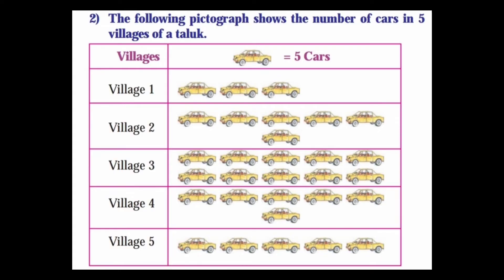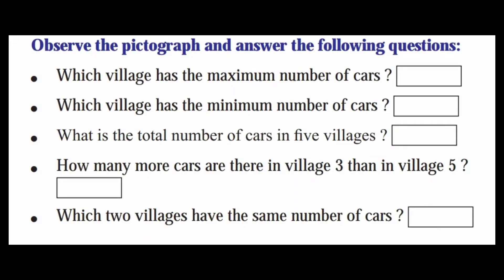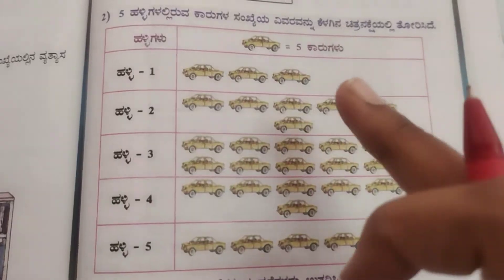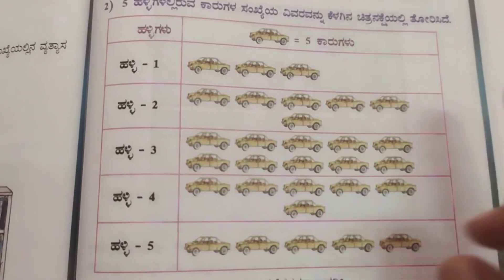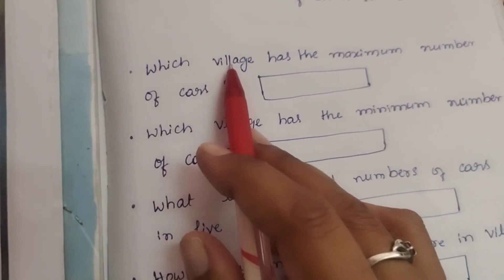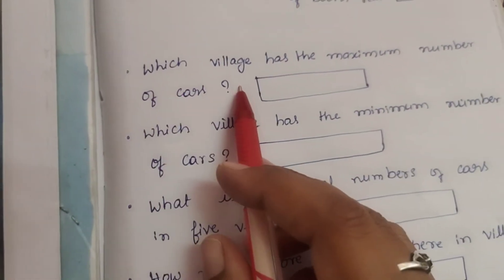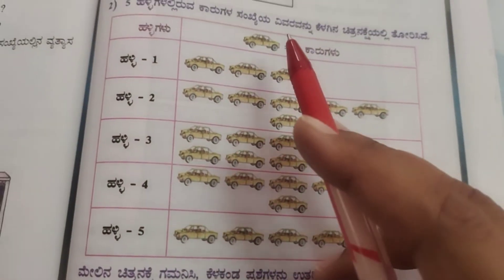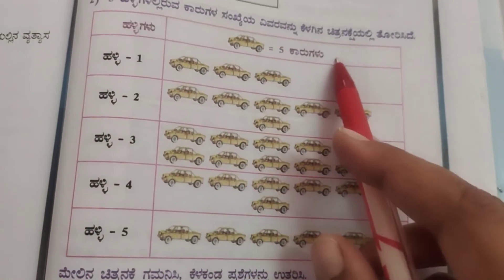Second question: The following pictograph shows the number of cars in five villages. Observe the pictograph and answer the following questions. One car picture is equal to 5 cars.